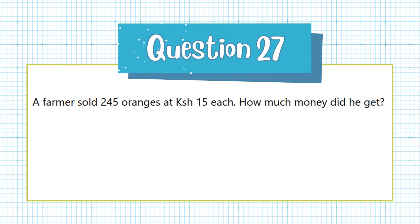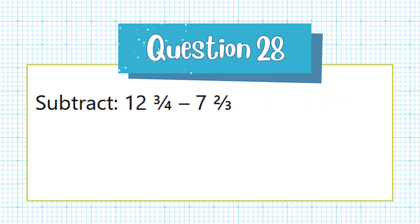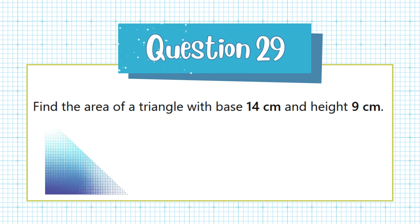Question 28. Subtract 12 and 3 quarters from 7 and 2 thirds. Question 29. Find the area of a triangle with base 14 cm and height 9 cm.